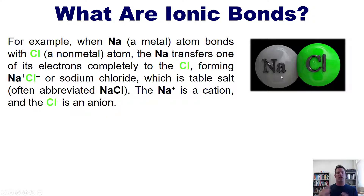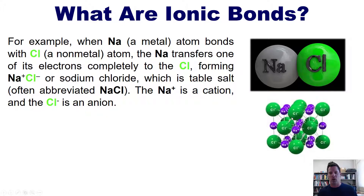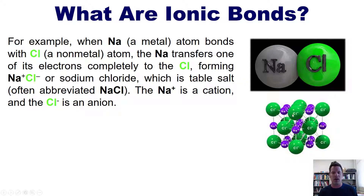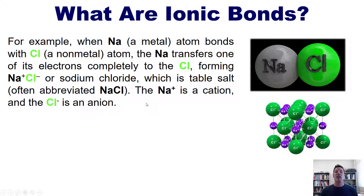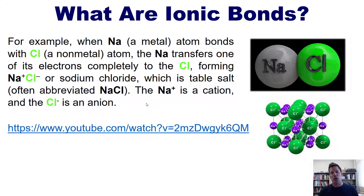Those sodium chloride ions cluster together like magnets, with positive charges pointing at negative charges in a complementary fashion. They form a lattice that repeats this cluster of atoms over and over in all directions until they reach the size you can see when you look at table salt. For a video showing the formation of sodium chloride from sodium metal and chlorine gas, I invite you to check out the link included in the description below.